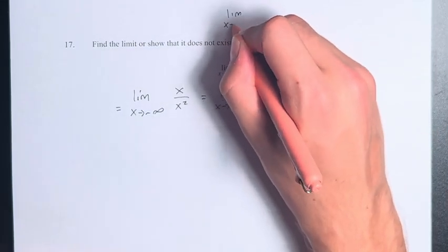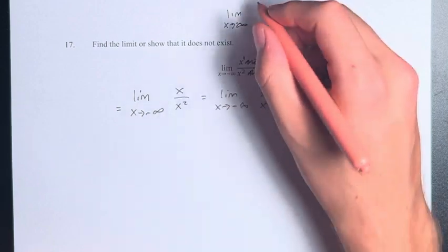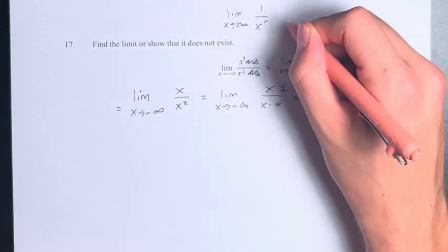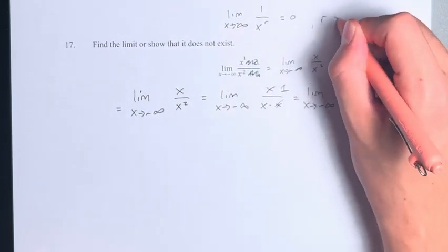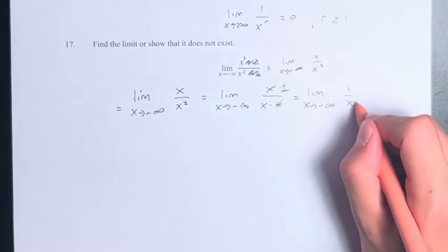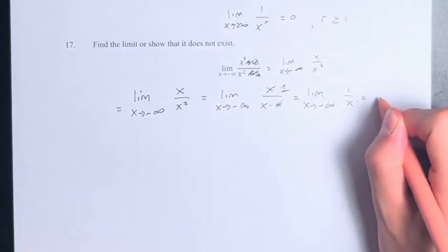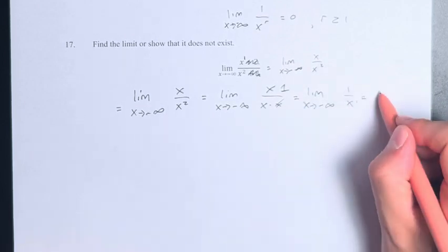The limit as x approaches infinity, or negative infinity, of 1 over x to the r is equal to 0 if r is greater than or equal to 1. In this case, we have 1 over x to the 1, so it does fit that. Therefore, we can say that the limit is equal to 0.